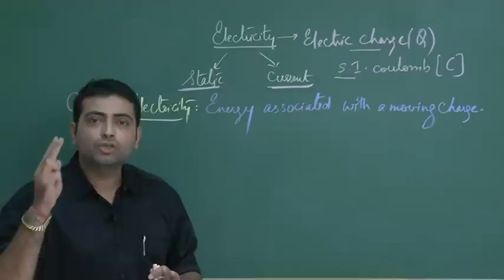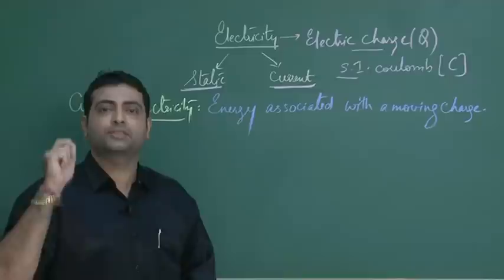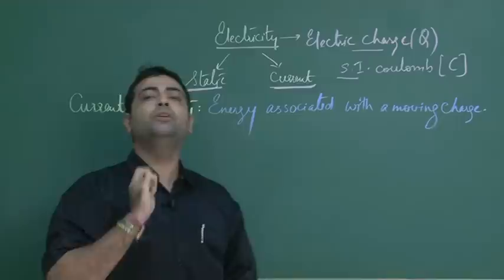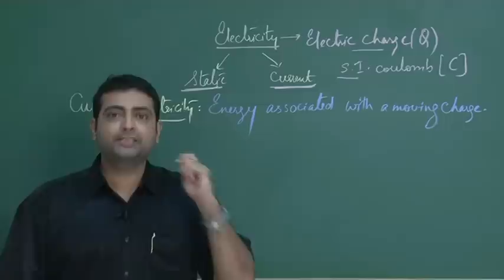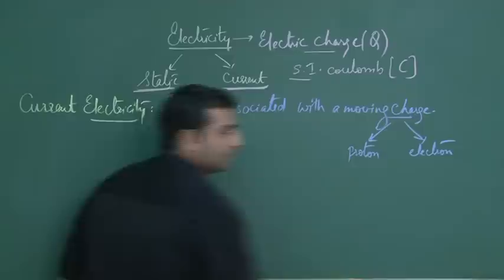We are all familiar with two basic electric charges: protons and electrons. Where do you find protons? Protons are embedded into the nucleus, having a positive charge — thereby the nucleus has a positive charge. What about electrons? Electrons certainly revolve around the nucleus, performing uniform circular motion, and they have a negative charge. So charges are of two kinds: protons and electrons.